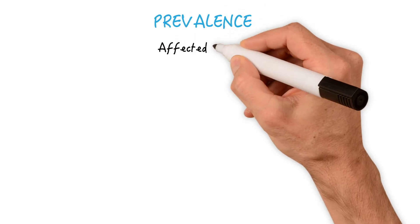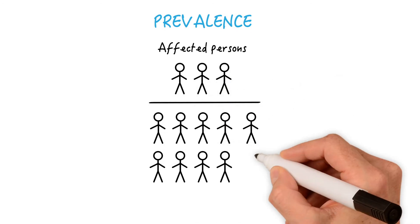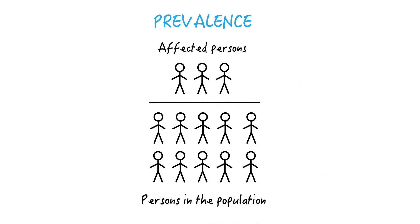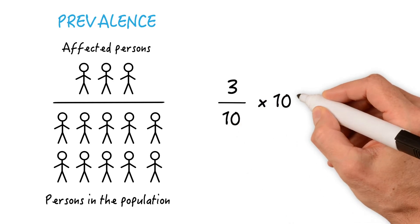Prevalence is defined as the number of affected persons in the population divided by the number of all persons in that population at a specific point in time. So in this fictitious example, it would be 3 divided by 10 times 1000,